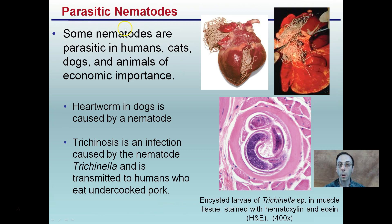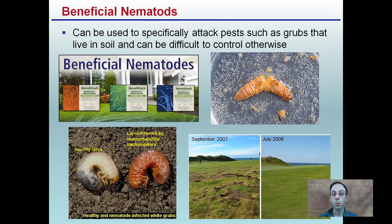Not all nematodes are bad — there are beneficial versions. They can be used to specifically attack pests such as grubs that live in soil, which can be difficult to control otherwise. If you know someone trying to have a healthy lawn and get rid of grubs, they may apply pesticides, but those pesticides can kill other insects, reduce the earthworm population, and be negative for the environment. Adding beneficial nematodes — and there are different strains — causes them to seek out, feed on, and parasitize these grubs, multiplying inside the grub. When the population gets really high, the grub dies and all these other individuals are released to go find other grubs.